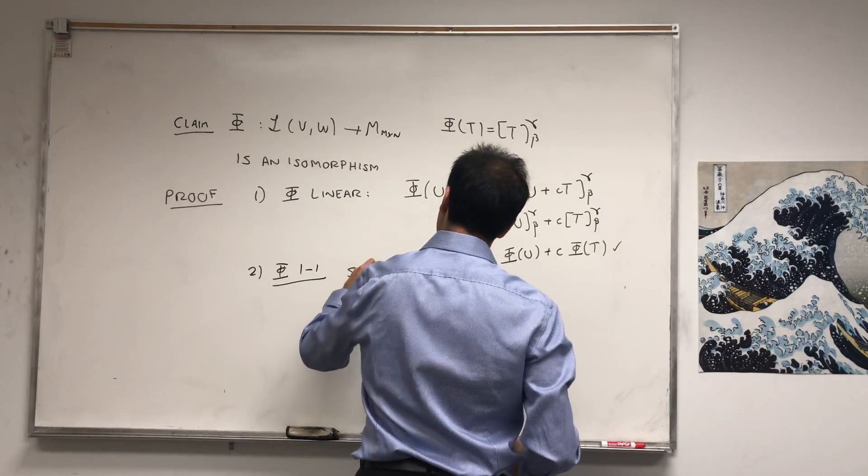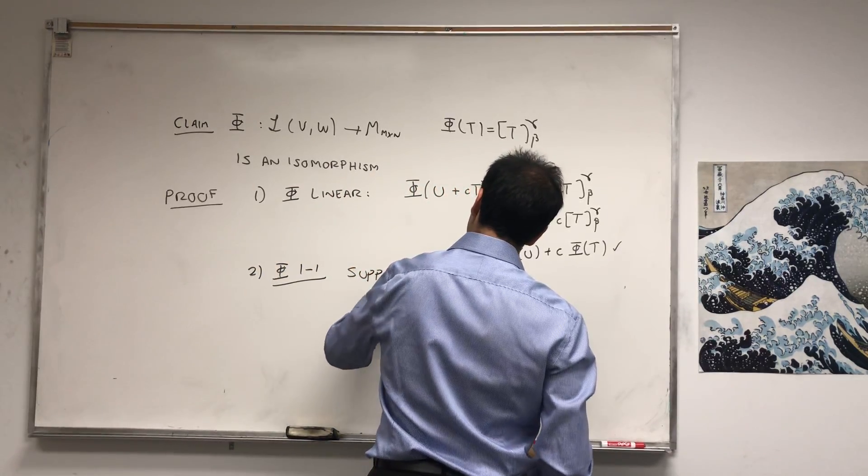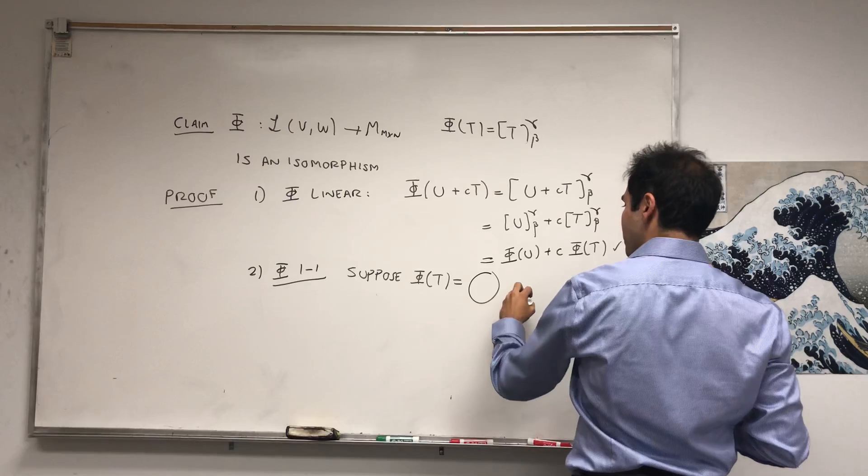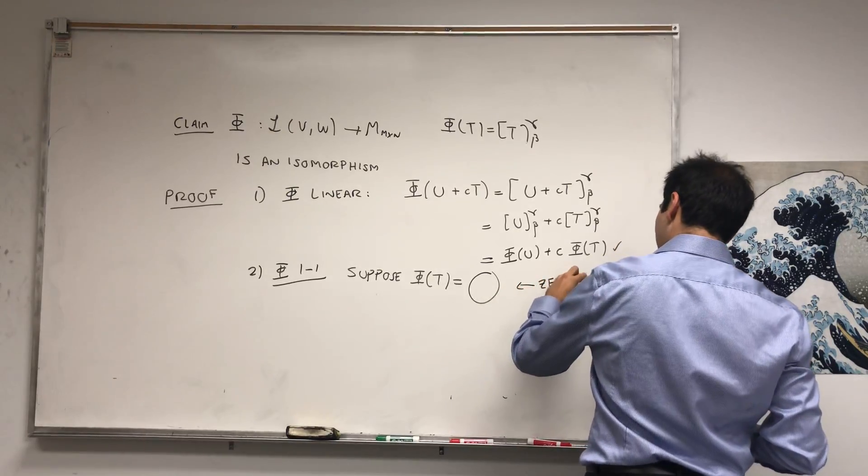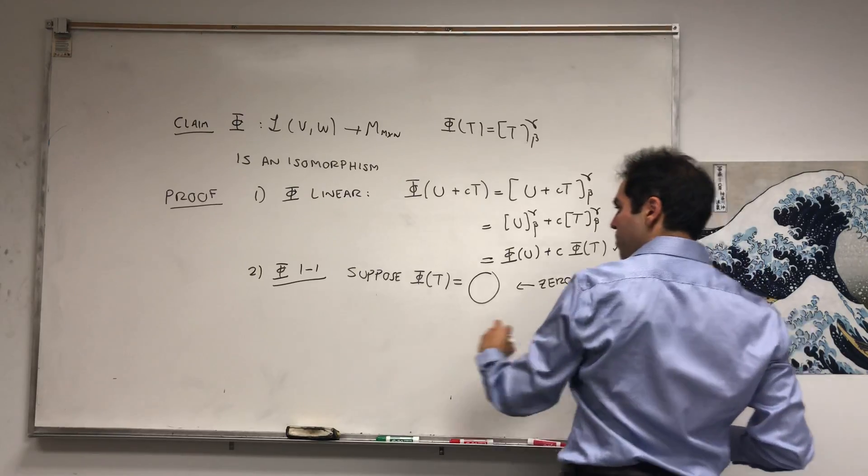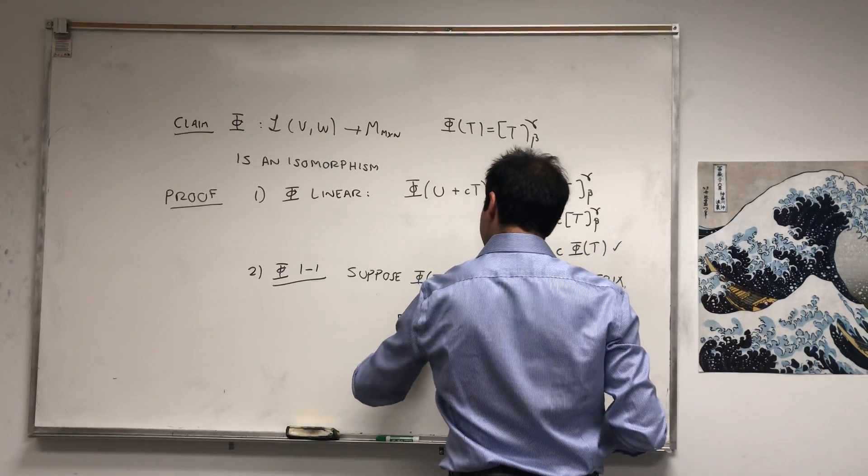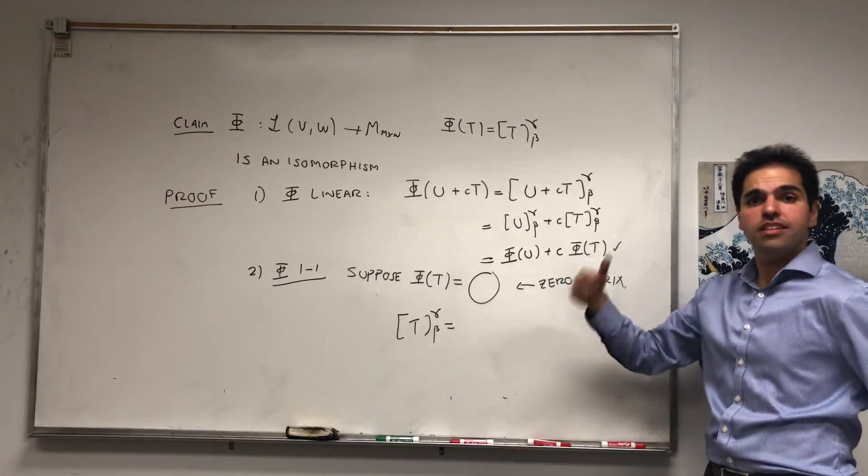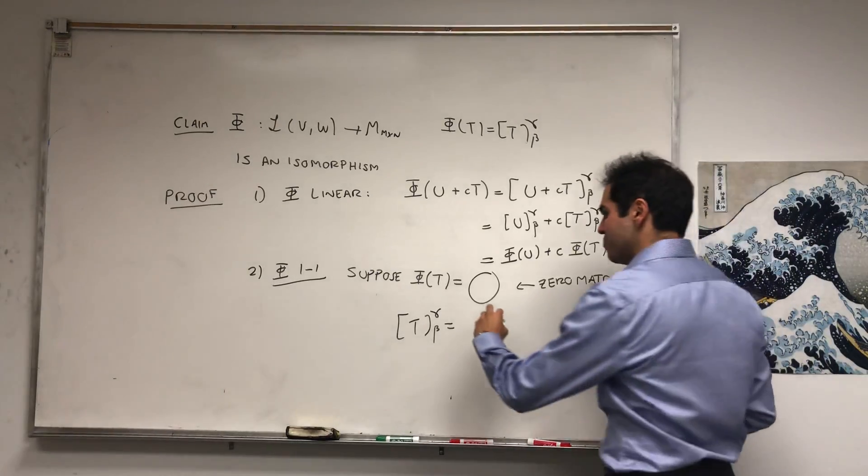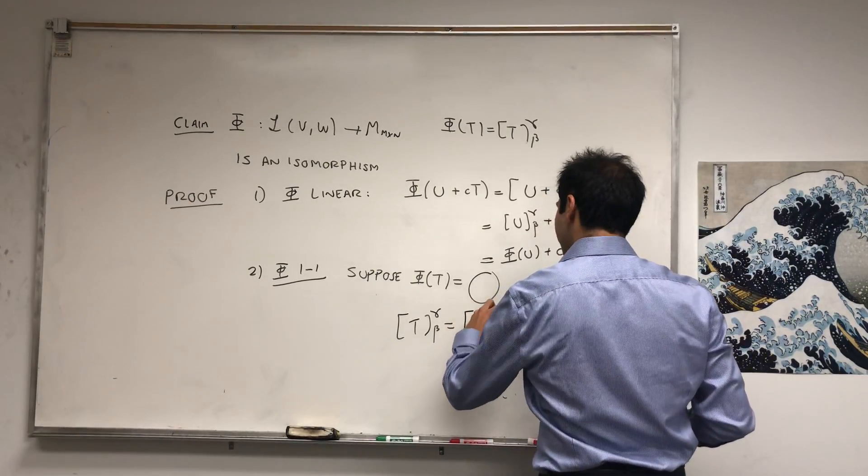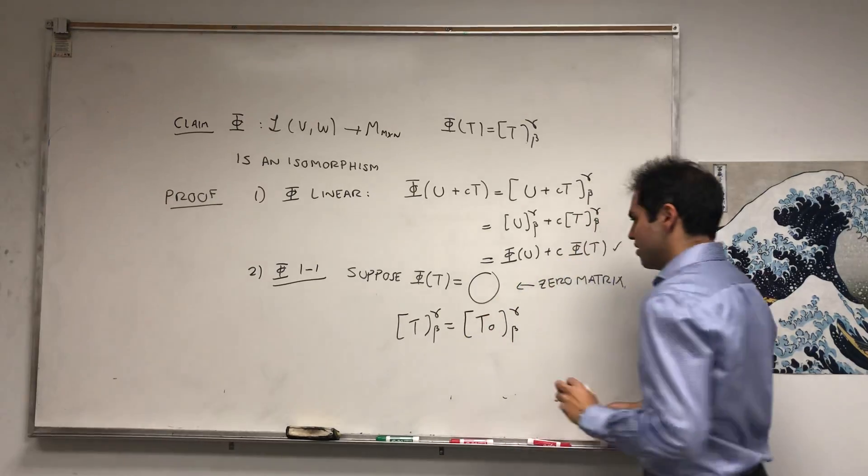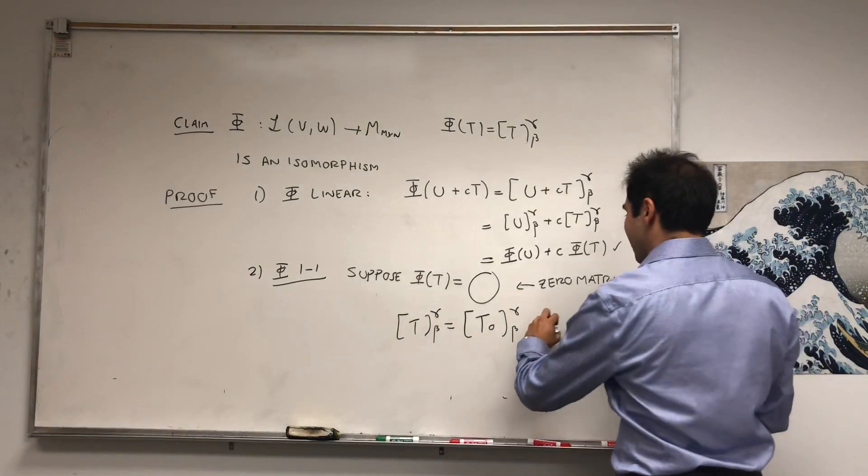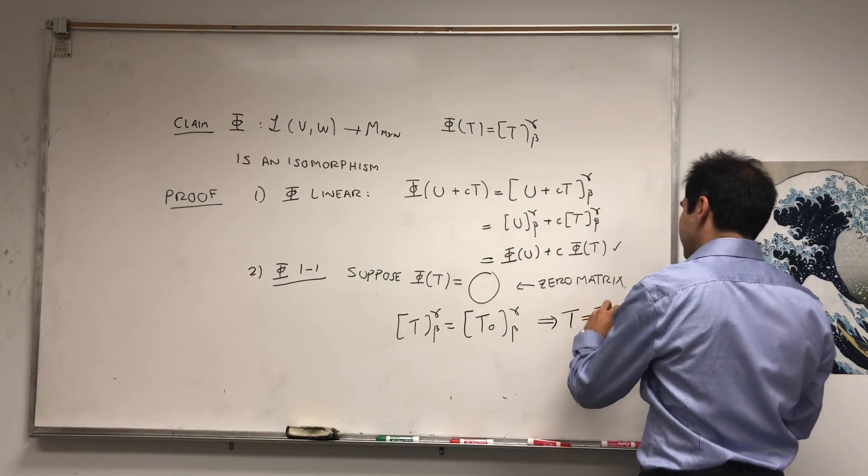Well, suppose phi of T is zero. In this case, zero is the zero matrix, so big O. Well, by definition, phi of T is the matrix of T from beta to gamma. On the other hand, the zero matrix is the matrix of a certain linear transformation, which is the zero transformation.